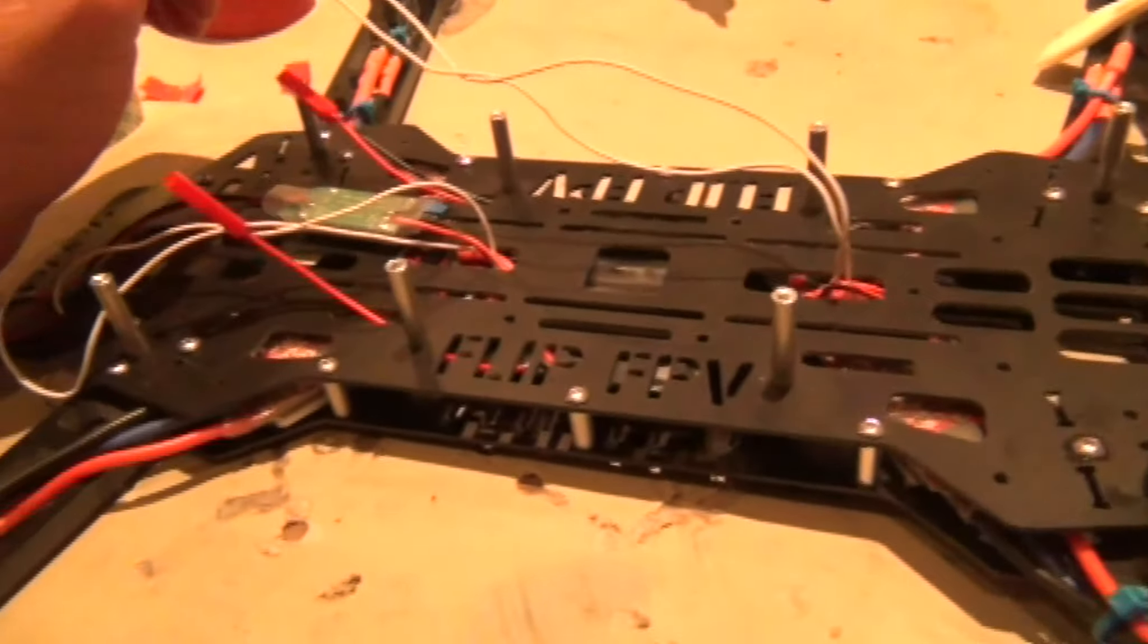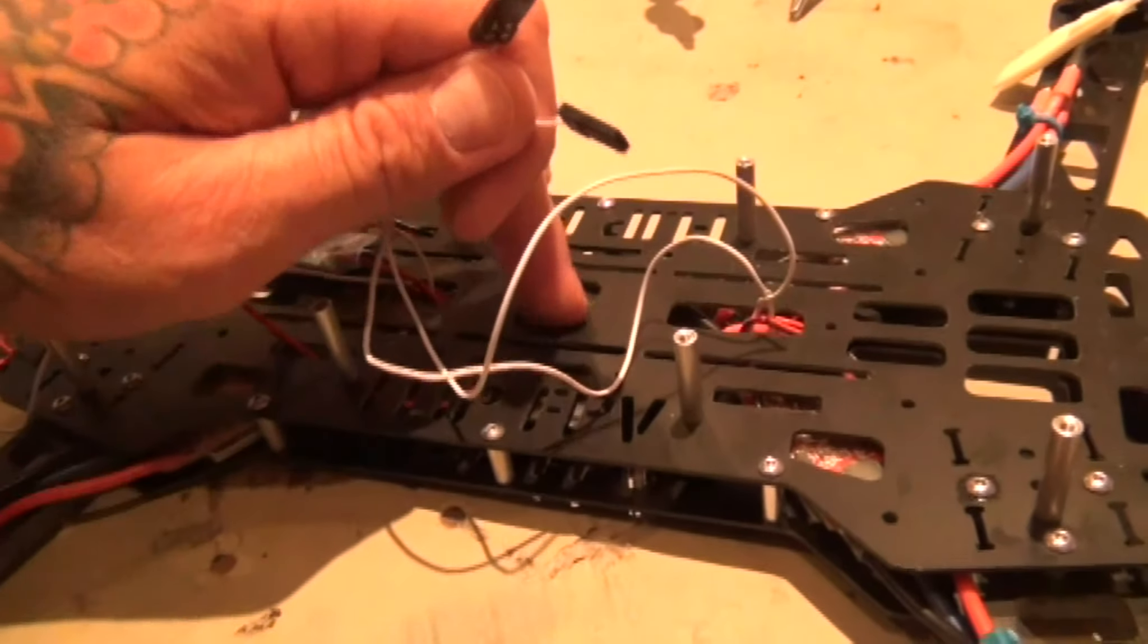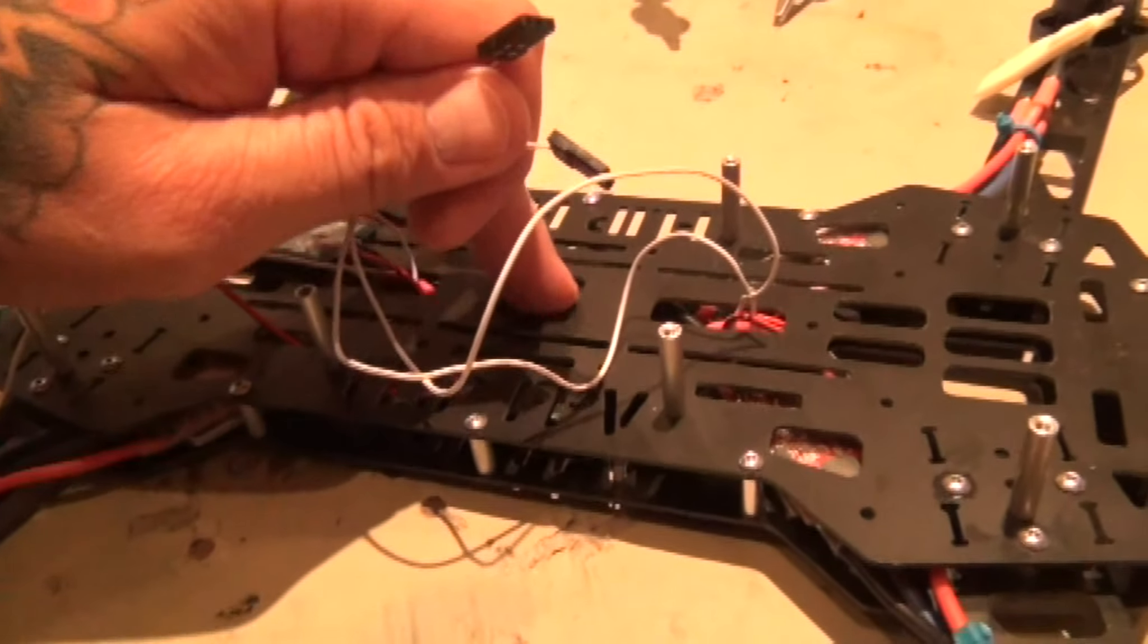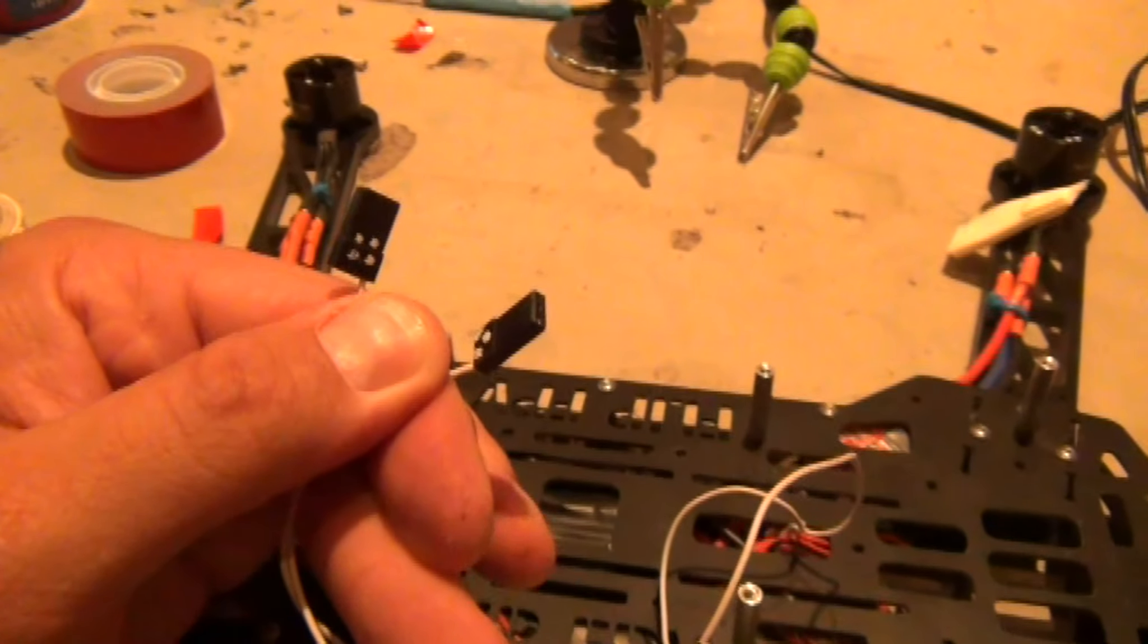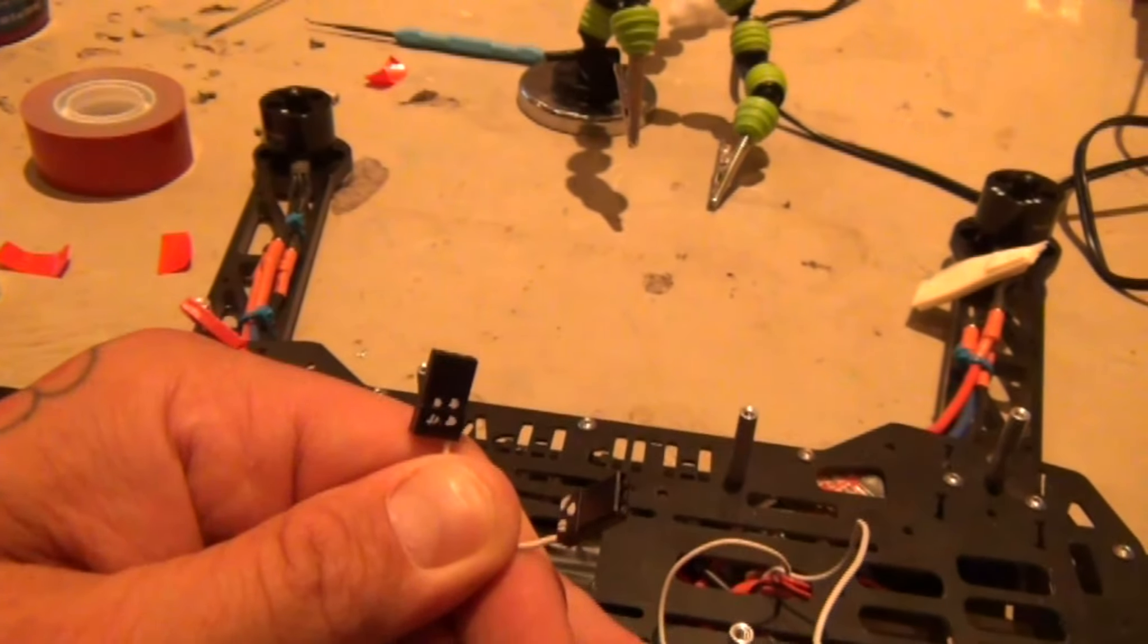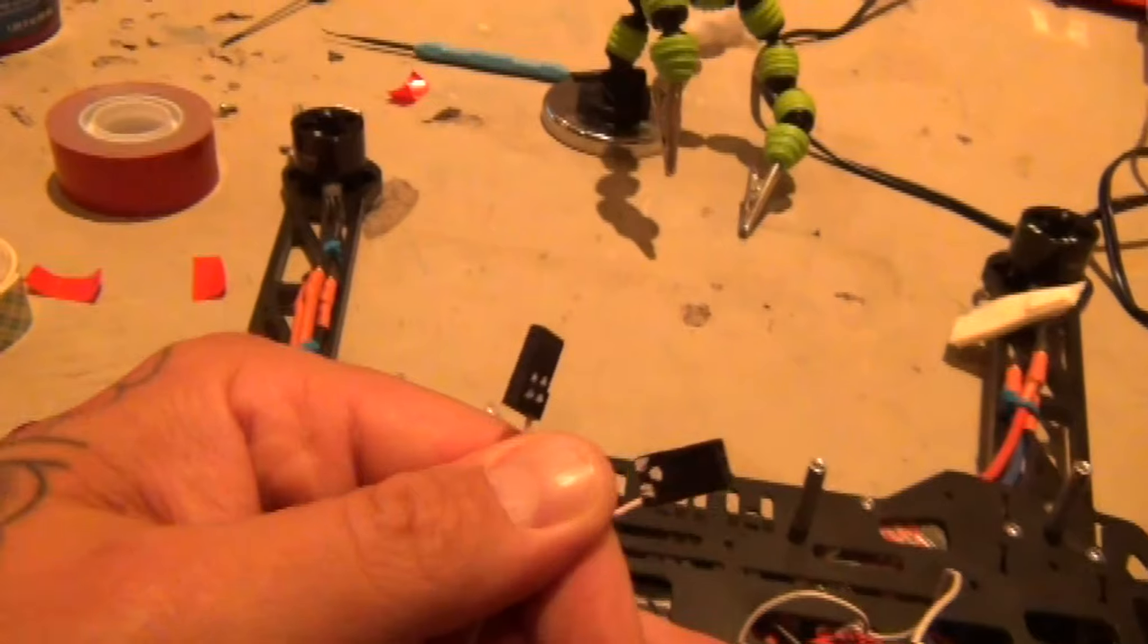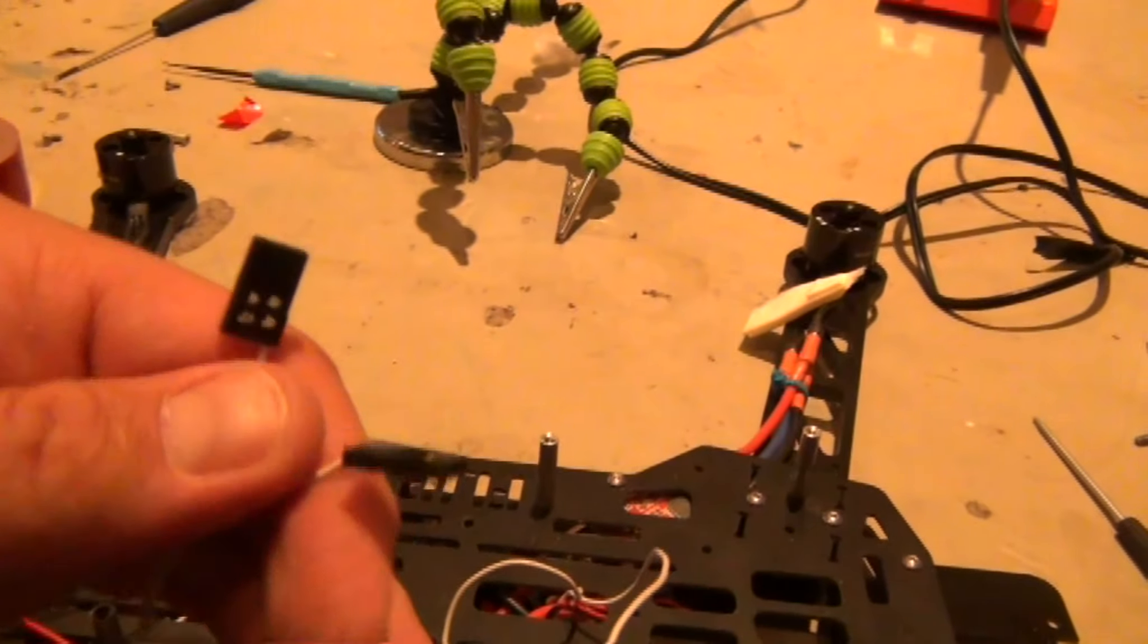Alright guys, we're back. I installed my upper plate with the distribution board stuck right down in here with the ESCs. I have my signal wires for the ESCs coming up, and I used a little white paint marker to dot them out so you can see what motor they go to.